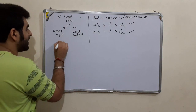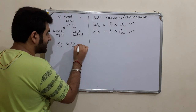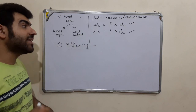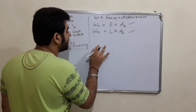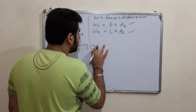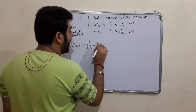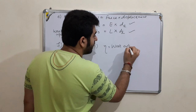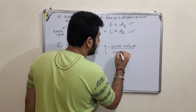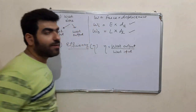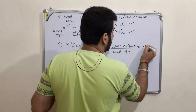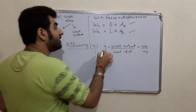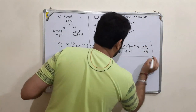Next is efficiency, denoted by the symbol eta (η). Efficiency is defined as work output divided by work input: η = Work Output / Work Input.